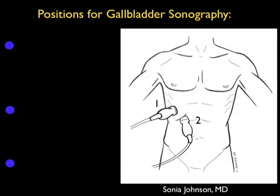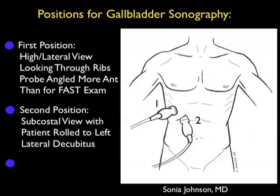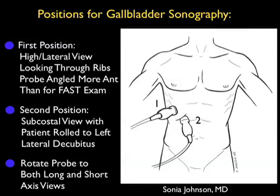Let's begin with a review of the positions for gallbladder sonography. As shown in probe position 1, the first position often used is known as the high lateral view, in which we're looking through the ribs. It's best to use a smaller footprint probe for this exam so that we can easily sit the probe between the ribs. We're going to be coming in at a view very similar to the right upper quadrant view for the trauma FAST exam, however the probe here is angled more anteriorly than for the FAST exam to image the gallbladder.